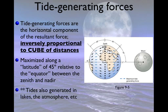What we mean by tide-generating force: tide-generating force is specifically the horizontal component of the resultant force. Remember, we can look at the vertical and horizontal parts of any force — that's where vectors came from. This is just the component along the surface of the Earth. This is in bold because it's really important, because this is a function of both centripetal force as well as gravitational force.